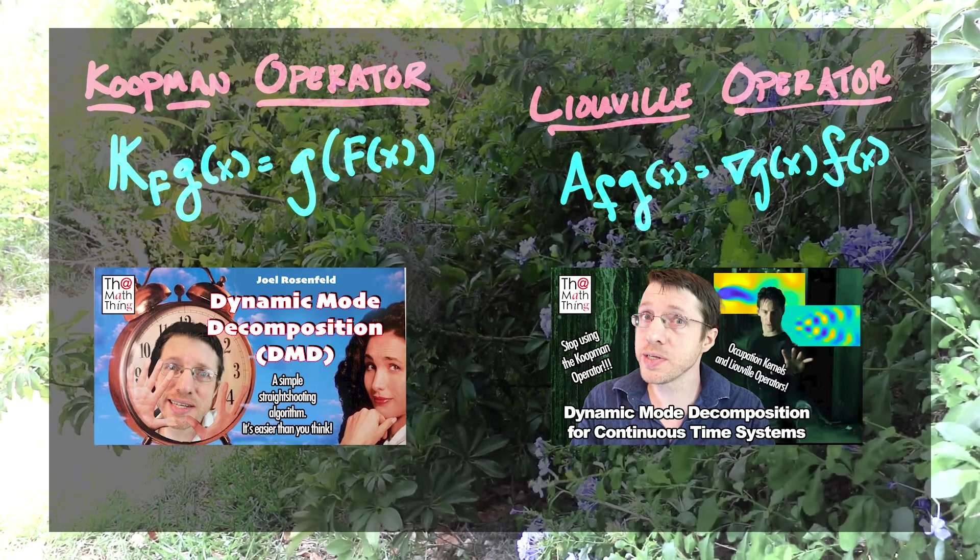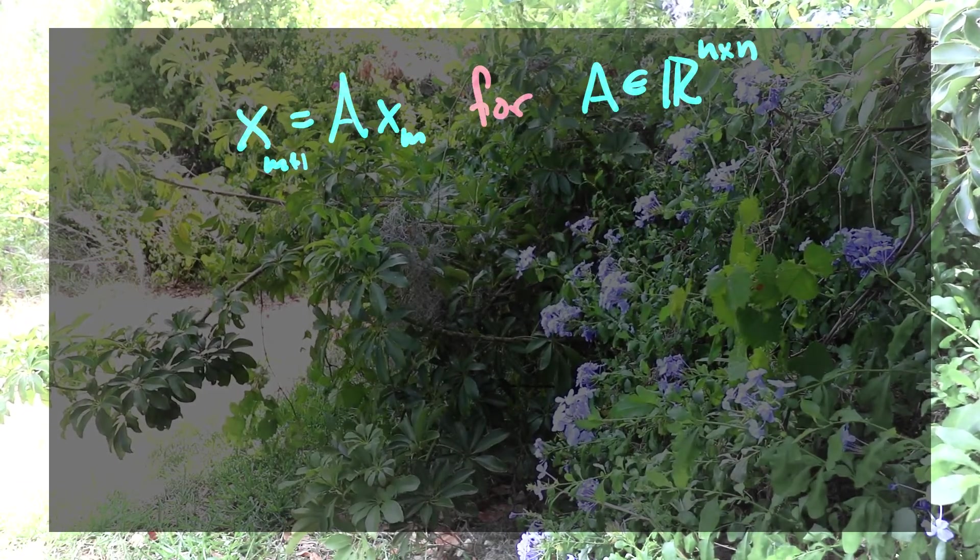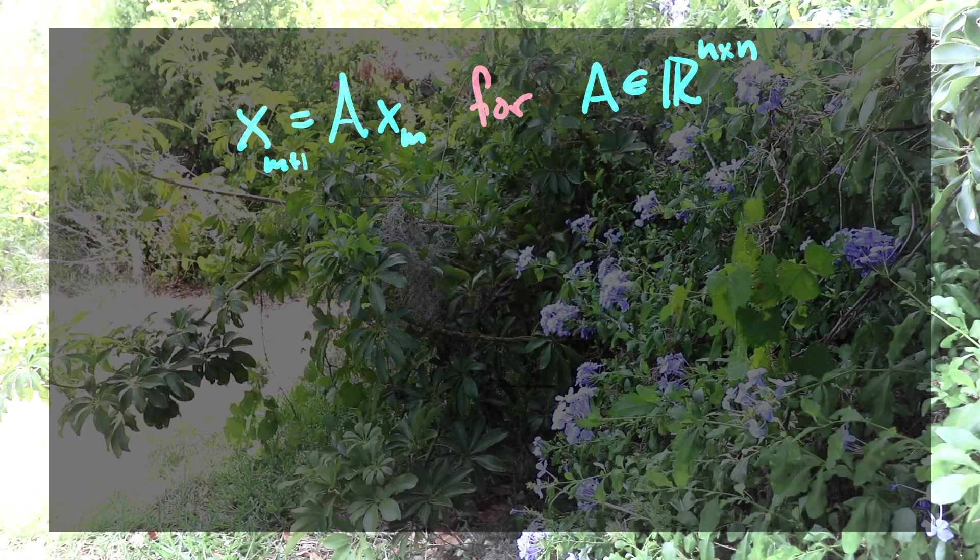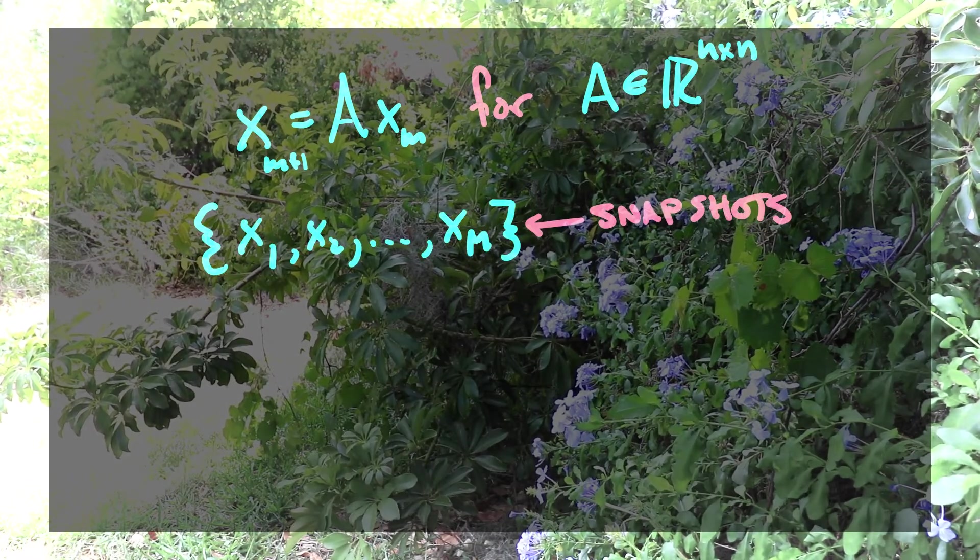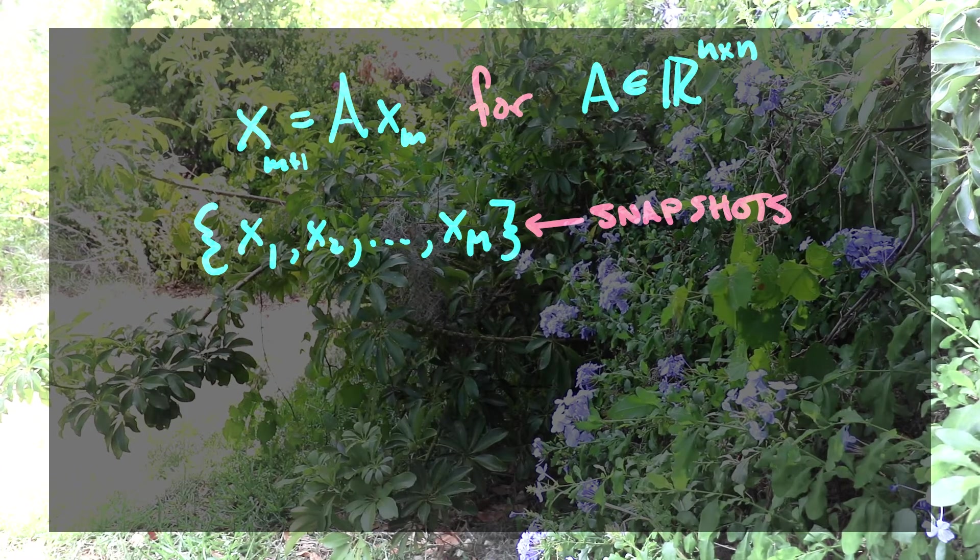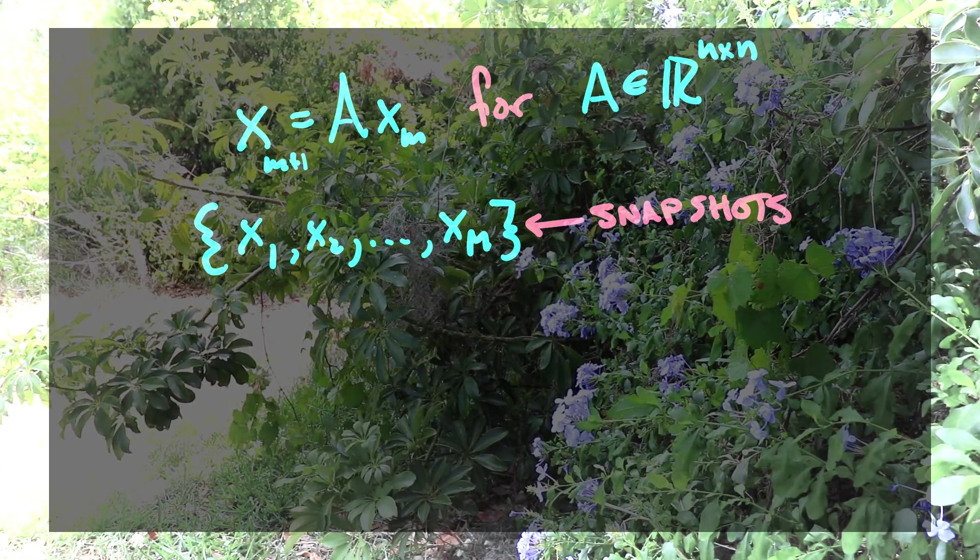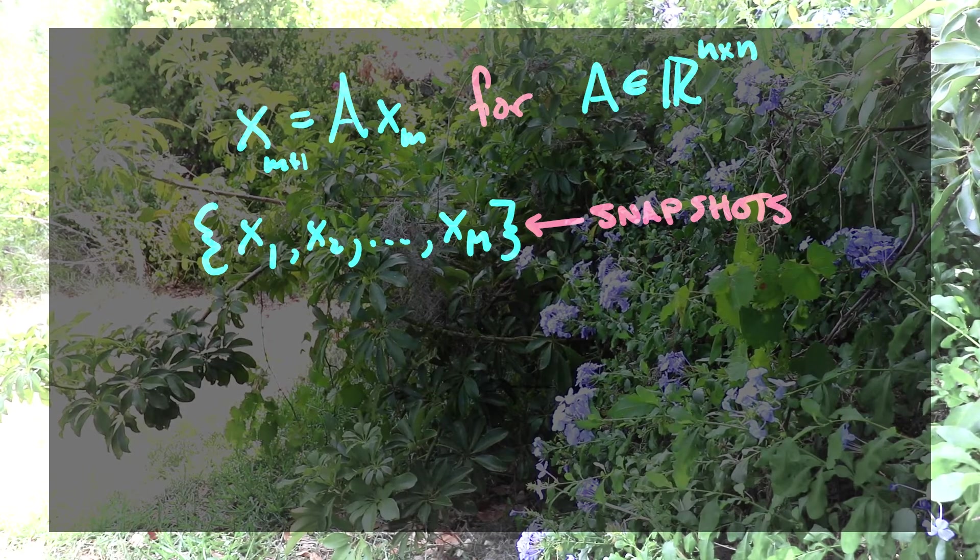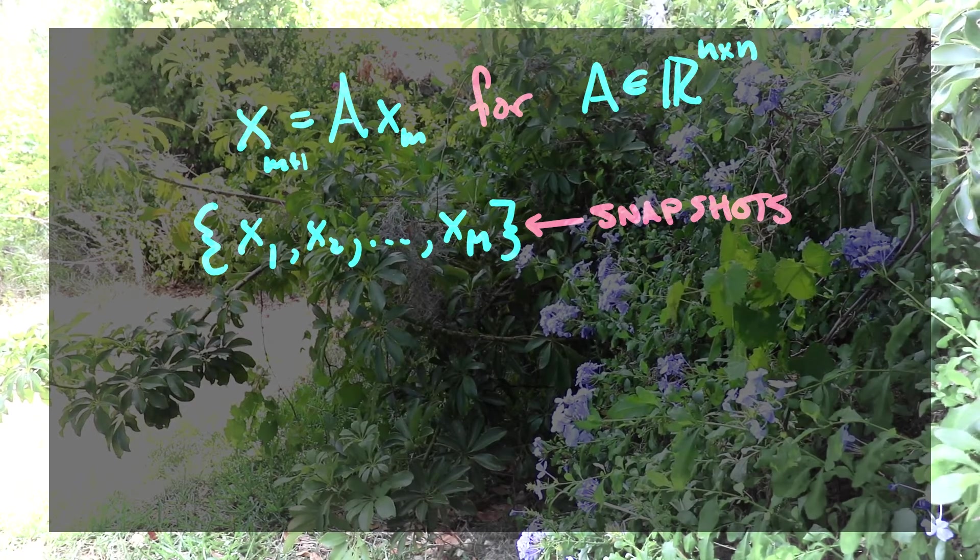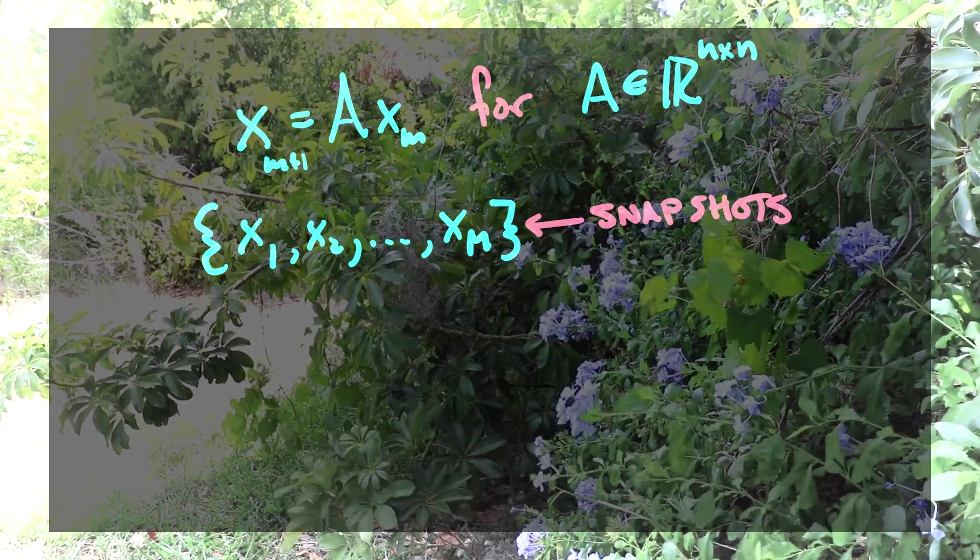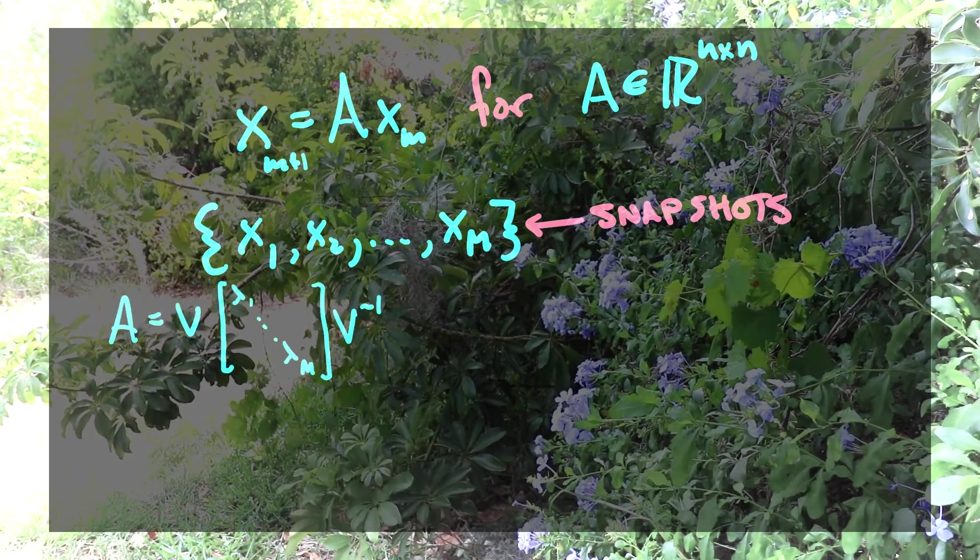Well, the answer starts with linear systems. So remember that we have a collection of snapshots from a time series. We'll assume that we have a discrete time dynamical system. And so if we have something like a linear system, where we go from one snapshot to the next by multiplying by a matrix.